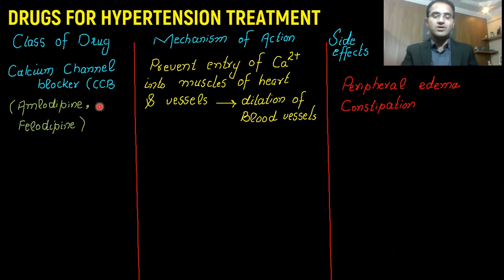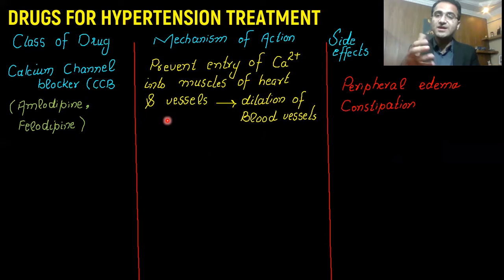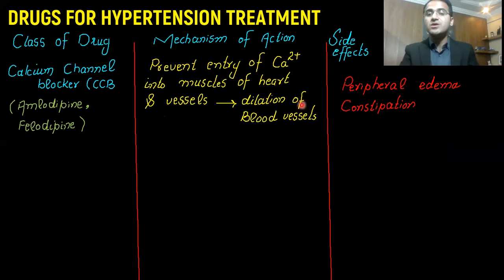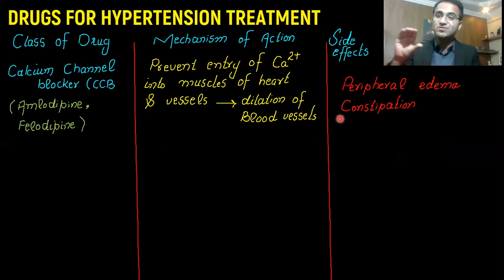The first class is calcium channel blockers, which include amlodipine, felodipine — all the drugs that end with 'dipine.' Their mechanism of action is that they prevent entry of calcium into the muscles of the heart and vessels, leading to decreased contractility of the heart and dilation of blood vessels, resulting in lower blood pressure. The side effects include peripheral edema, since vasodilation causes retention of fluid in the peripheries, and constipation, since they slow down the activity of smooth muscles of the GI tract.